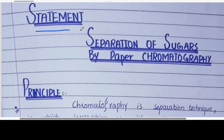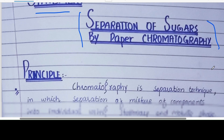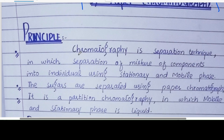Now we start the experiment. First of all, you will write down the experiment statement, then write down the apparatus, then the chemical reagents, then the procedure, and in the last, write down the observations in your notebook.